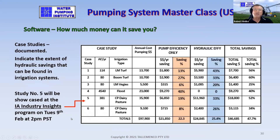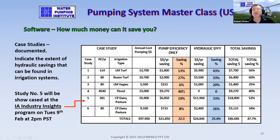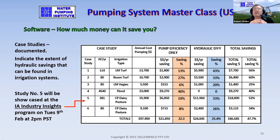How effective has it been? Here's my track record — I won't teach anything I can't do myself or prove you can do too. These are six case studies taken over the last 10 years. In every case I've divided the audit into pump efficiency and hydraulic efficiency. In five out of six, the hydraulic efficiency savings were greater than the pump efficiency savings. Excluding the one outlier in the middle — which was a flood pump with no pipeline — the hydraulic savings from site audits were about three times the value of pump efficiency savings.